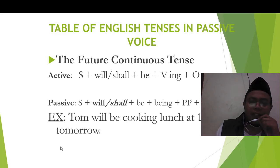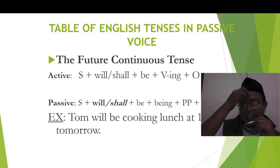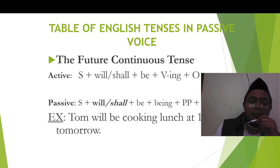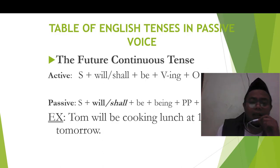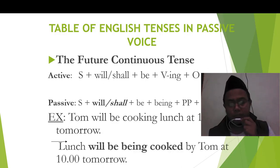Future continuous. Look at the example: Tom will be cooking lunch at 10 tomorrow. The pattern is subject plus shall or will plus be plus being plus past participle. It becomes: Lunch will be being cooked by Tom at 10 tomorrow.